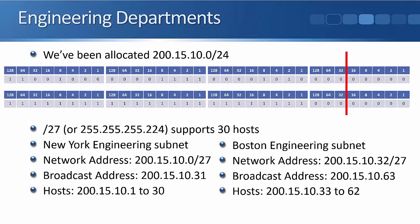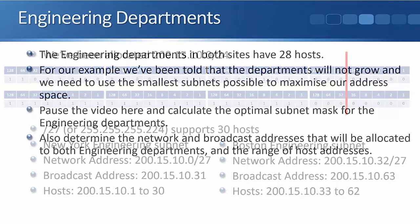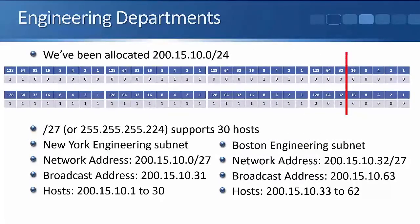We've been allocated 200.15.10.0/24. We've got two departments needing subnets with 28 hosts each. A /27 supports 30 hosts. A /28 supports only 14, so that's not big enough. The smallest we can use — which is what we were asked — is a /27. In real world you might prefer a /26, but this is an exam question so we use the smallest possible: /27. In dotted decimal notation that's 255.255.255.224.